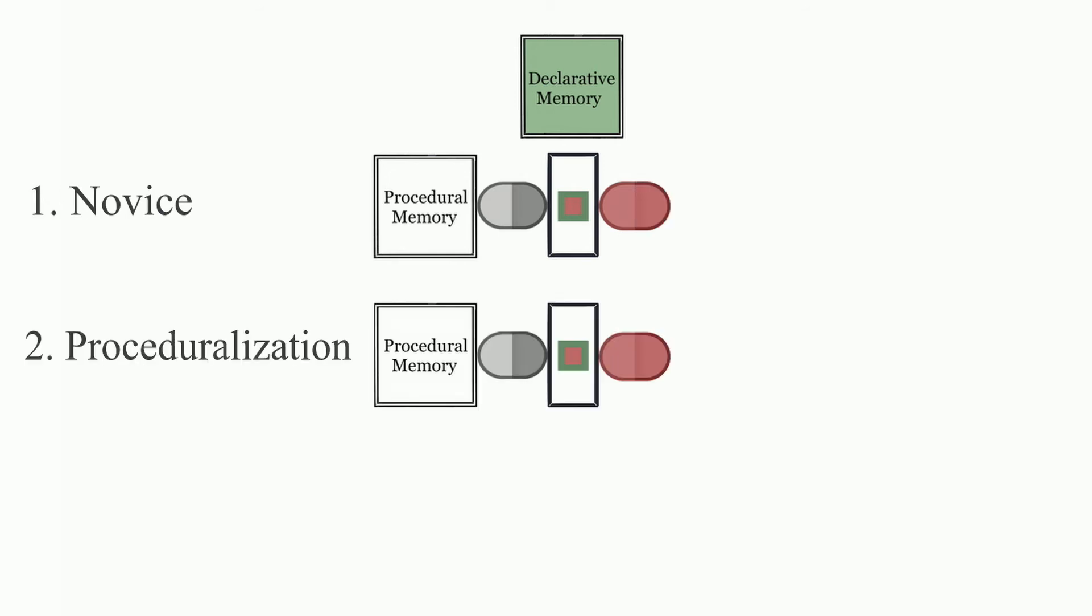In the second stage, proceduralization. As declarative knowledge is practiced, the production rules skip the instructions to become associated with the cue itself. This skipping of instructions is faster and so the production is rewarded.